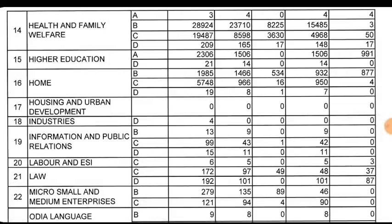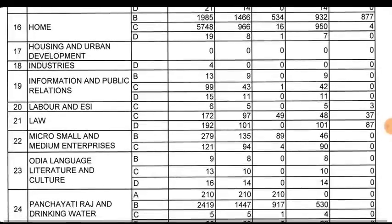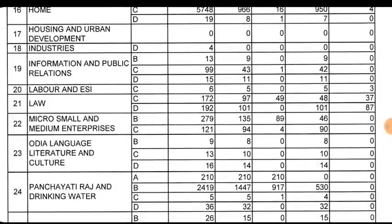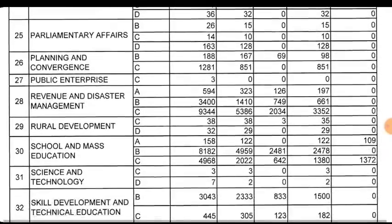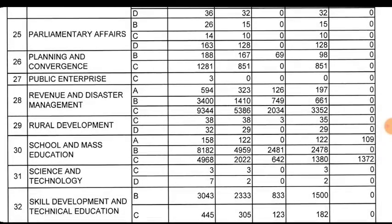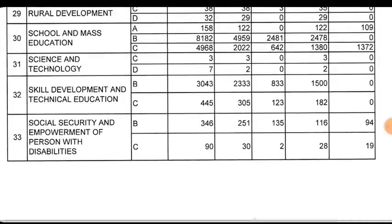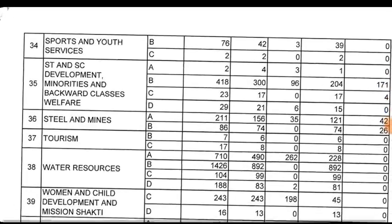Group B has 807 posts and Group C has 4 posts. The Law Department has Group C with 37 posts and Group D with 87 posts. School and Mass Education has Group B with 807 posts and Group C with 312 posts. Further breakdown shows Group C with 807, Group D with 857, and Group C with 808 posts.